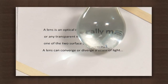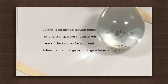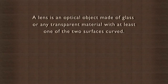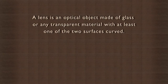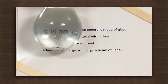Here the curved side of the bulb and the water in it act like a lens. A lens is an optical object that is made of glass or any transparent material with at least one of the two surfaces curved. A convex lens converges light rays and gives a magnified image of the object, as it did in this case.